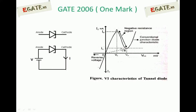If you further increase the voltage beyond point B, the current increases again with voltage, and after point B it acts as a normal PN junction diode. Looking at the characteristics from point A to point B, as voltage increases, current reduces. If you take any two points on this curve between A and B and calculate the slope delta I by delta V, it will definitely be negative, because as voltage increases, current is reducing. So this portion is called the negative resistance region or negative slope region.